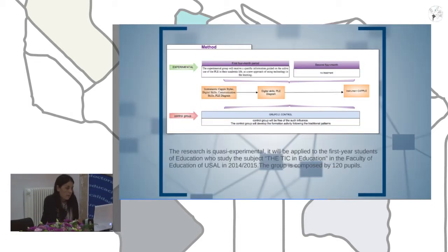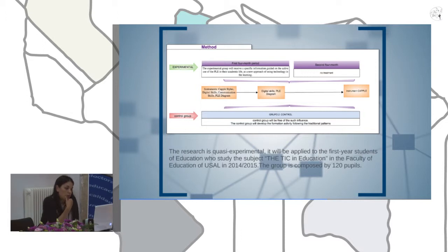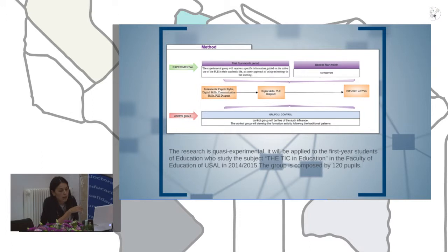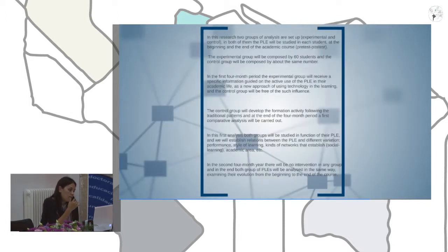The research design is quasi-experimental. It is applied to first-year students of education in the Facultad de Educación. The group includes over 120 people divided into two groups: an experimental group and a control group.